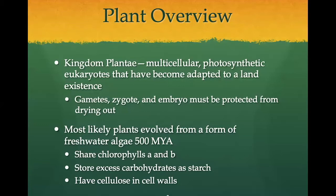Plants in the kingdom Plantae are multicellular photosynthetic eukaryotes. Although plants are well adapted to a land environment, the evolutionary history of plants began in the water. Evidence indicates that plants evolved from a form of freshwater green algae some 500 million years ago. Green algae are members of the same eukaryotic supergroup as plants, the archaeoplasts, and thus share some characteristics with plants. For example, green algae contain chlorophyll A and B as well as various accessory pigments. They also store excess carbohydrates as starch, just like plants, and they also have cellulose in their cell walls, just like plants.